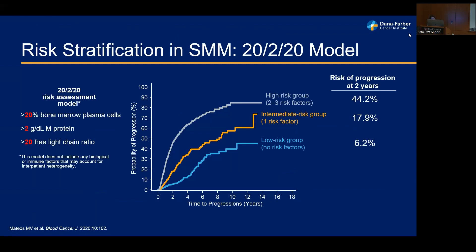Not every patient with smoldering myeloma has a 10% per year risk of progression. We utilize stratification tools to better personalize risk. One easy and common tool is the Mayo Clinic 20-20 model, which utilizes bone marrow plasma cell information, serum markers of the monoclonal protein, and serum-free light chain ratio — that's where the 20-20 comes from. The presence of none of these risk factors places you in the low-risk group; two or more risk factors place you in the high-risk group.